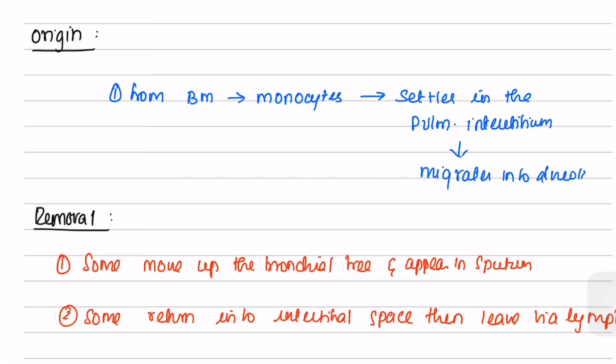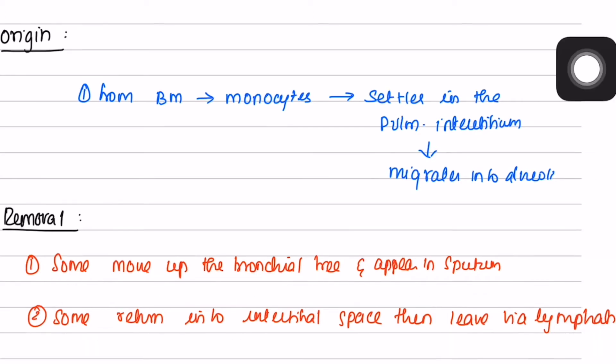Removal of alveolar macrophages: some move up the bronchial tree and appear in sputum. Some return into the interstitial space then leave via lymphatics.